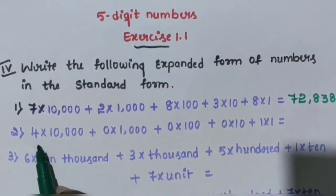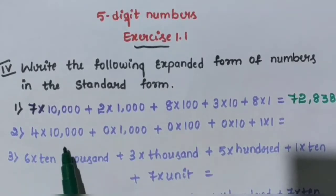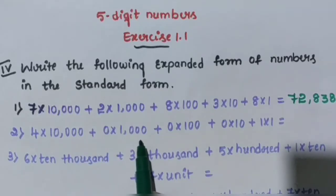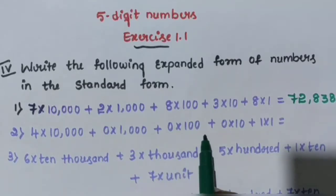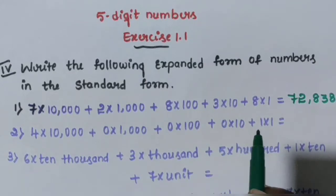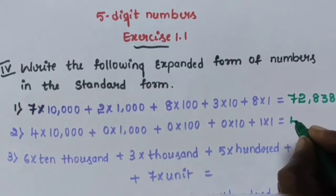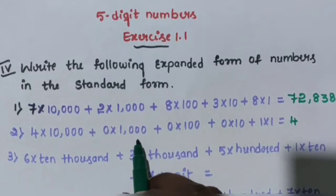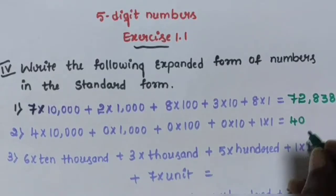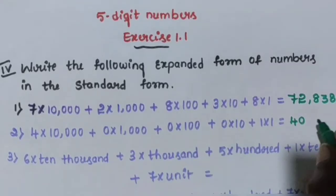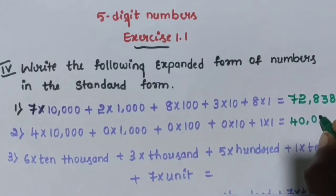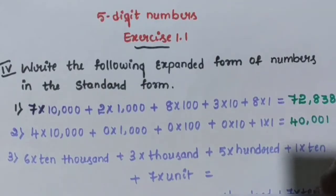Question number 2: 4 into 10,000 plus 0 into 1,000 plus 0 into 100 plus 0 into 10 plus 1 into 1. So 4 is in the 10,000 place, 0 is in the 1,000 place, 0 is in the 100 place, 0 is in the 10s place, and 1 is in the units place. The answer is 40,001.